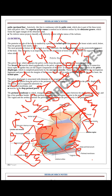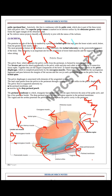To summarize from skin upward: skin, Colles' fascia, superficial perineal pouch, separated from deep perineal pouch by the perineal membrane, then the endopelvic fascia or urogenital diaphragm, which has superficial fascia and lining endopelvic fascia, and then above them the peritoneum.